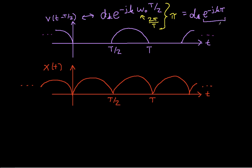This e to the minus j k pi term is interesting in the sense that it is going to be 1 when k is even, because when k is even it will be e to the 0 or e to the minus j 2 pi — that gives a cosine of a multiple of 2 pi, which is 1. It'll be negative 1 when k is odd. Another way of writing this is minus 1 to the k, which is much more compact and less messy.